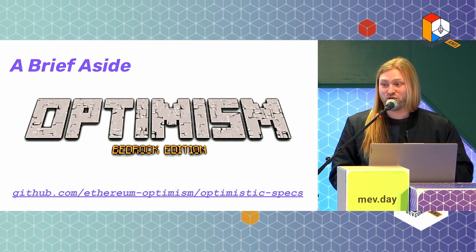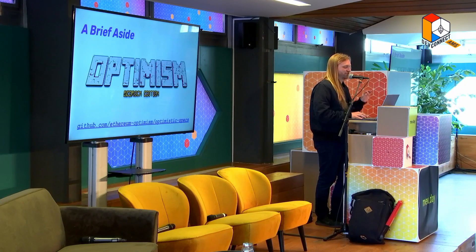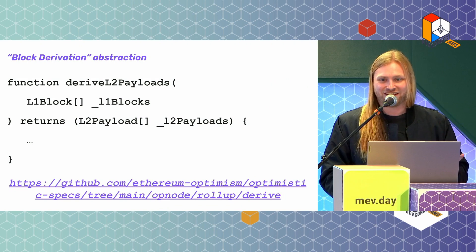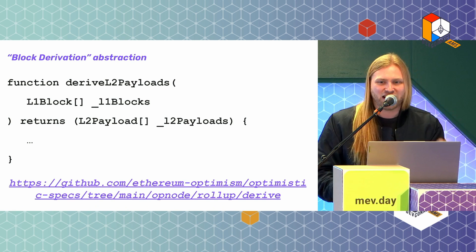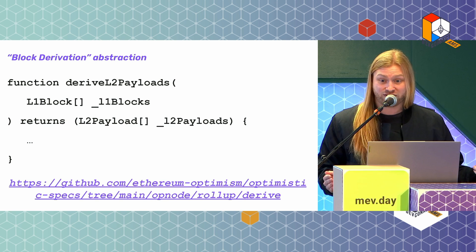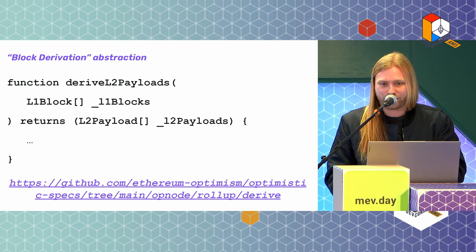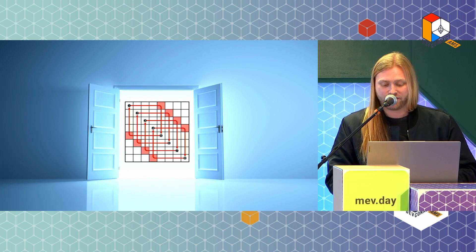I want to start with a brief aside just because I know we have some amazing MEV people here. If you are working on sequencing challenges and if you are working on the ETH2 merge API, please check out the Optimism Bedrock codebase. This is the coolest codebase for sequencing designs, especially as they apply to ETH2 and cross-domain stuff. We basically have this new beautiful abstraction called the block derivation function, which takes in a list of L1 blocks and outputs a list of L2 blocks. This makes constructing different sequencing designs a whole lot easier. There's a link in the slides.